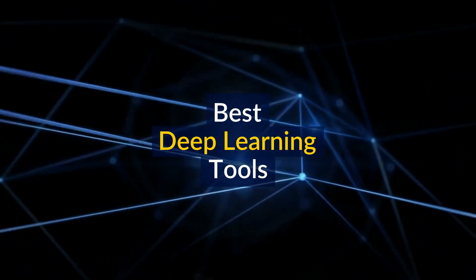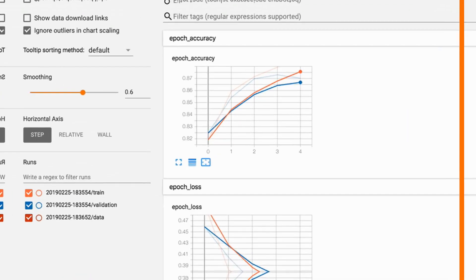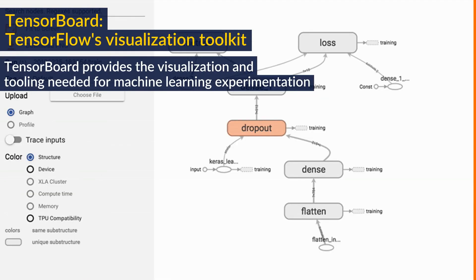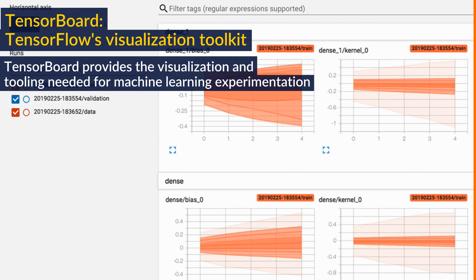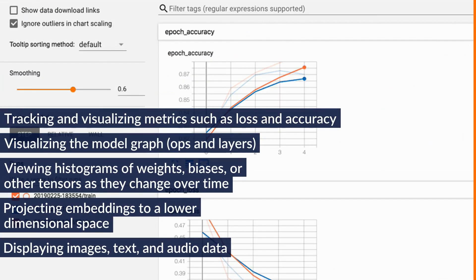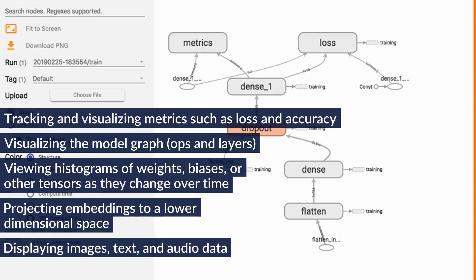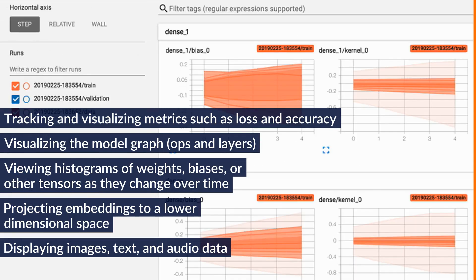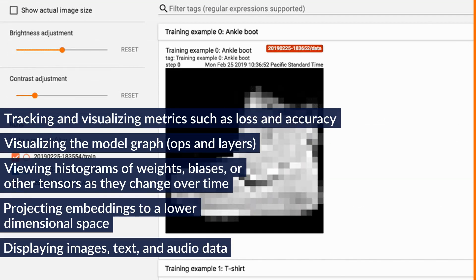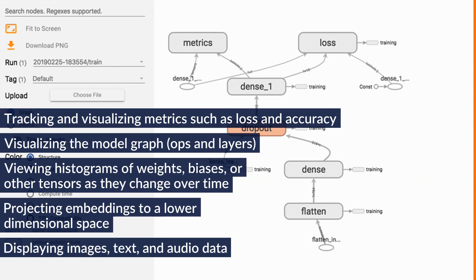Best deep learning tools: TensorBoard, TensorFlow's visualization toolkit. TensorBoard provides the visualization and tooling needed for machine learning experimentation, tracking and visualizing metrics such as loss and accuracy, visualizing the model graph ops and layers, viewing histograms of weights, biases, or other tensors as they change over time, projecting embeddings to a lower dimensional space, and displaying images, text, and audio data.